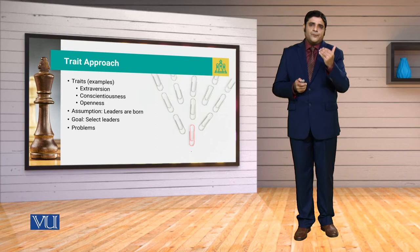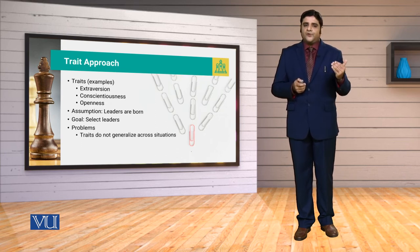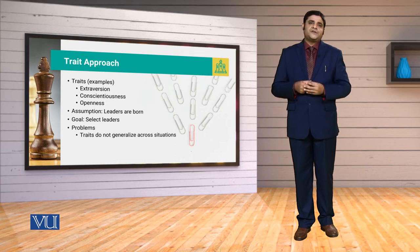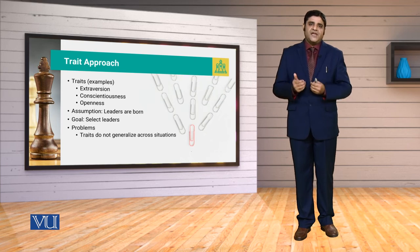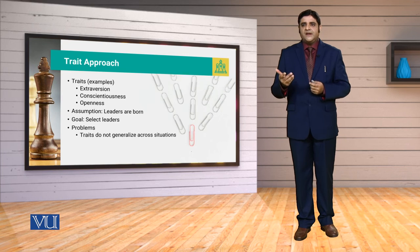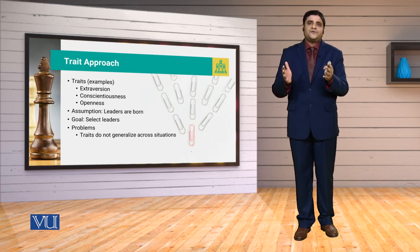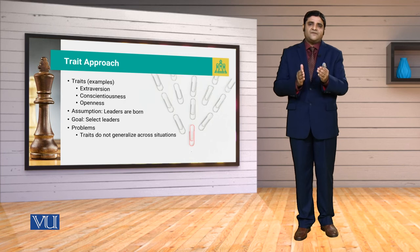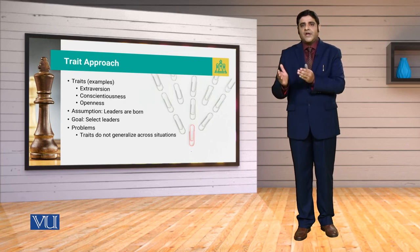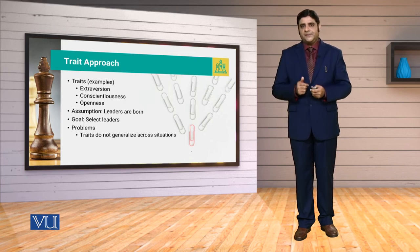Lekin the problem which we encountered related to trait theories was, number one, traits do not generalize across situations. Har situation ke liye humeh aisi traits na mil sakein jinko hum generalize ya universal keh sakein. Natiijataan, humare paas koi ek aisa set of traits nahi develop ho saka jis mein hum leader ki effectiveness ya ineffectiveness ko calculate ya differentiate kar sakein.